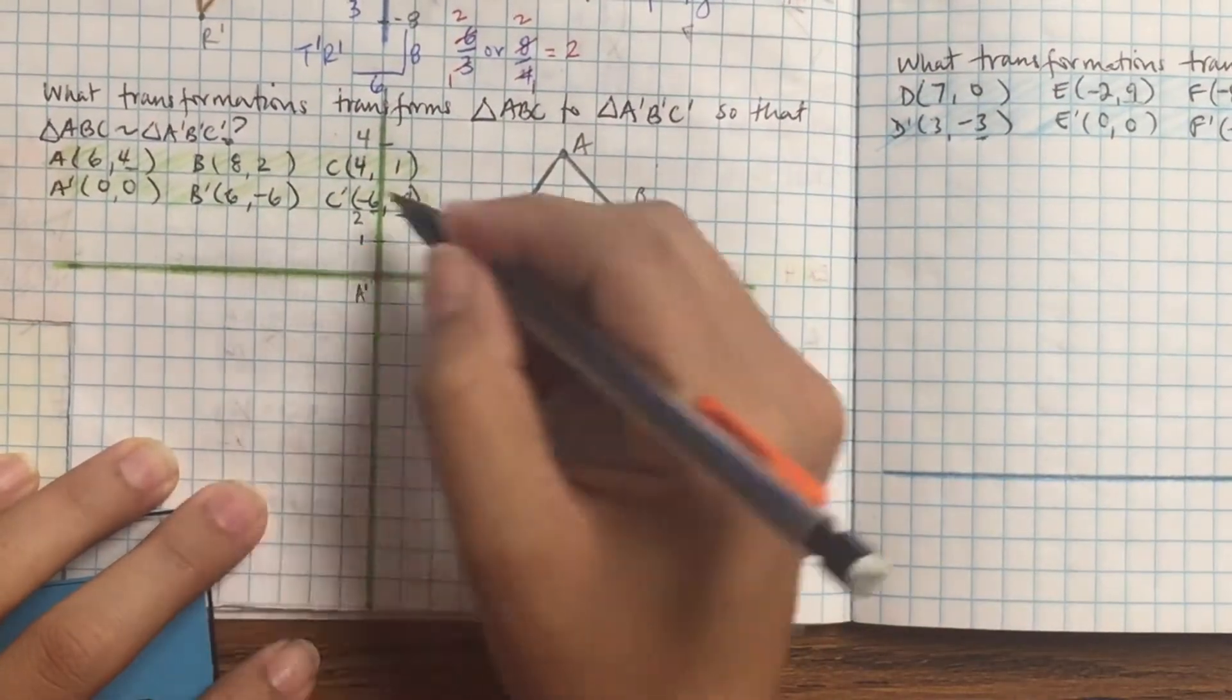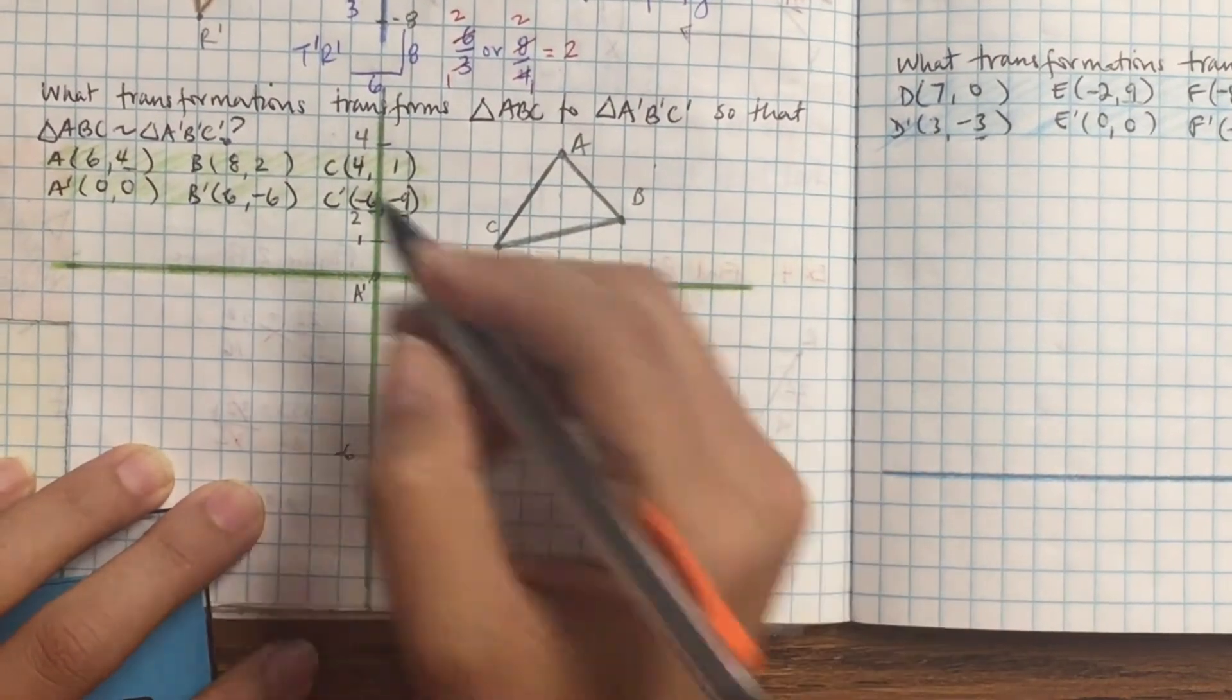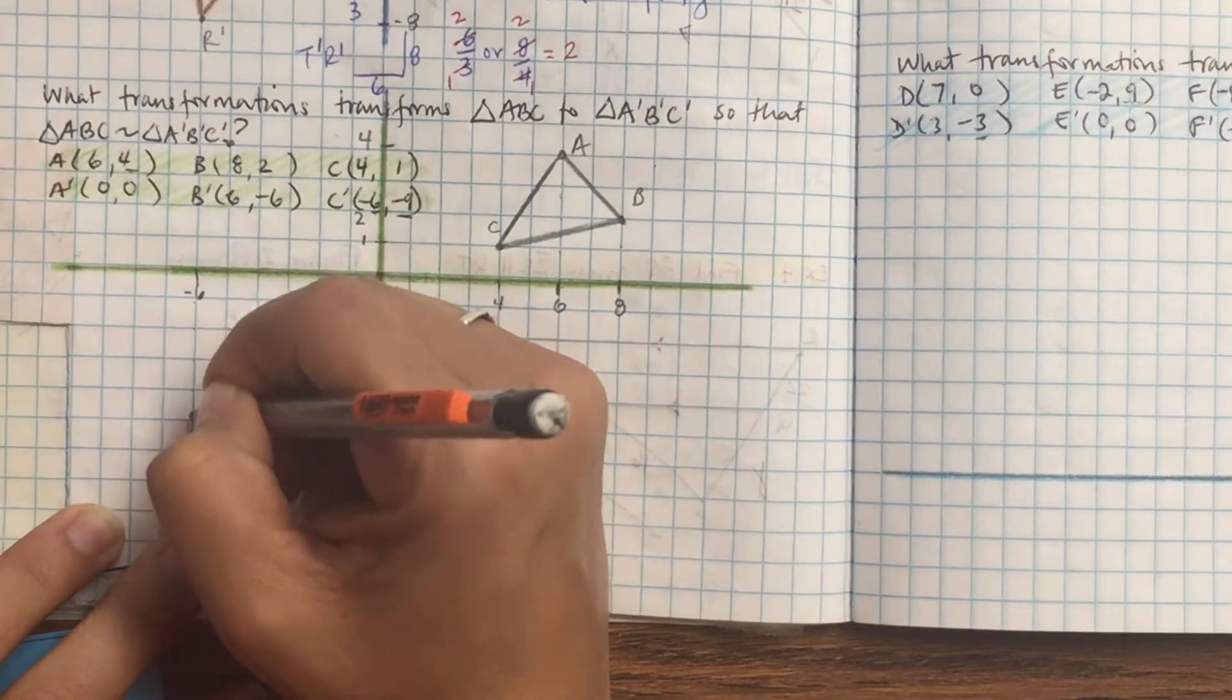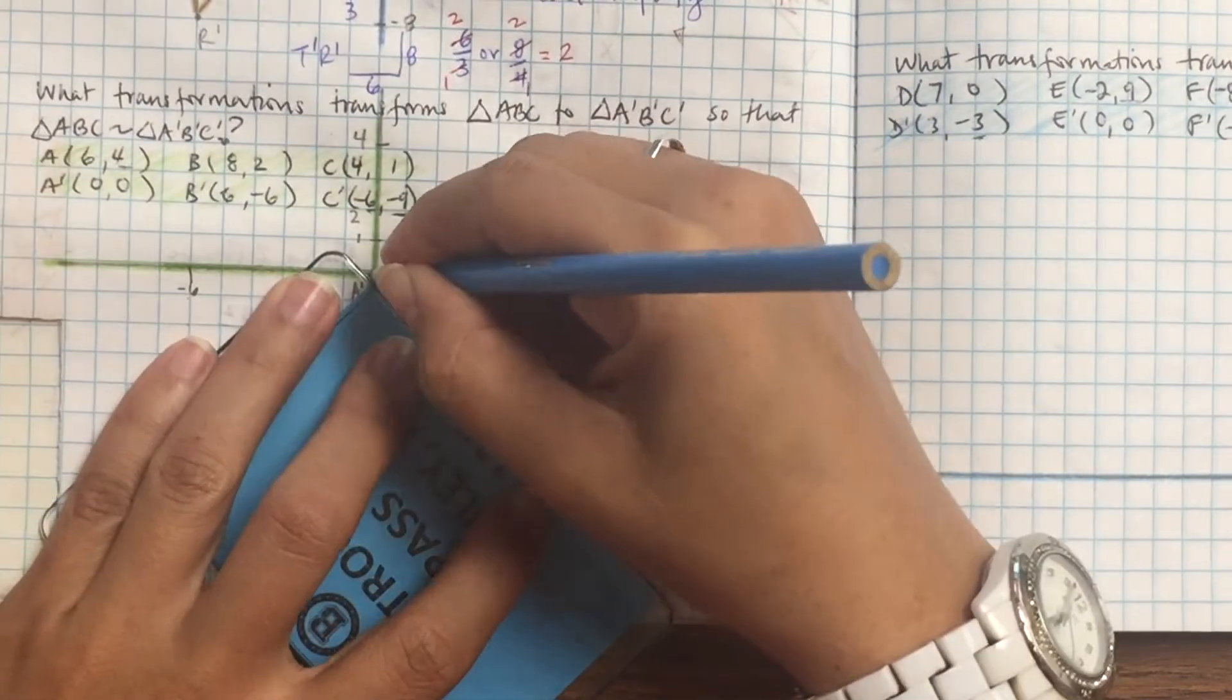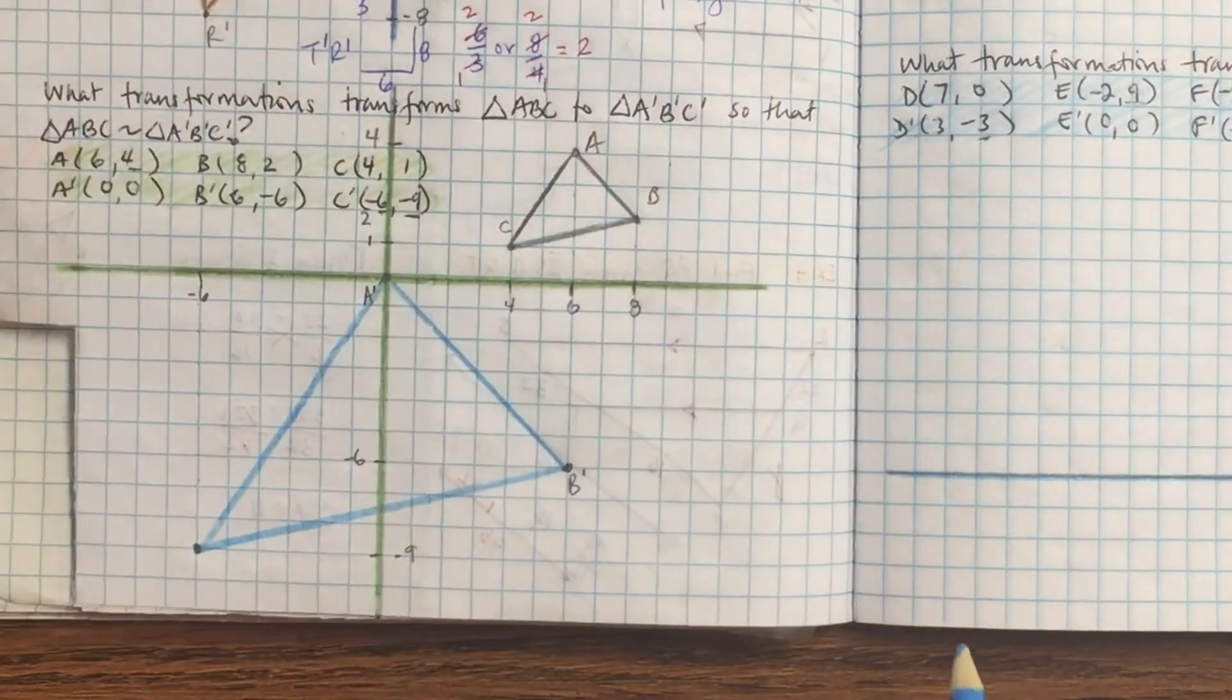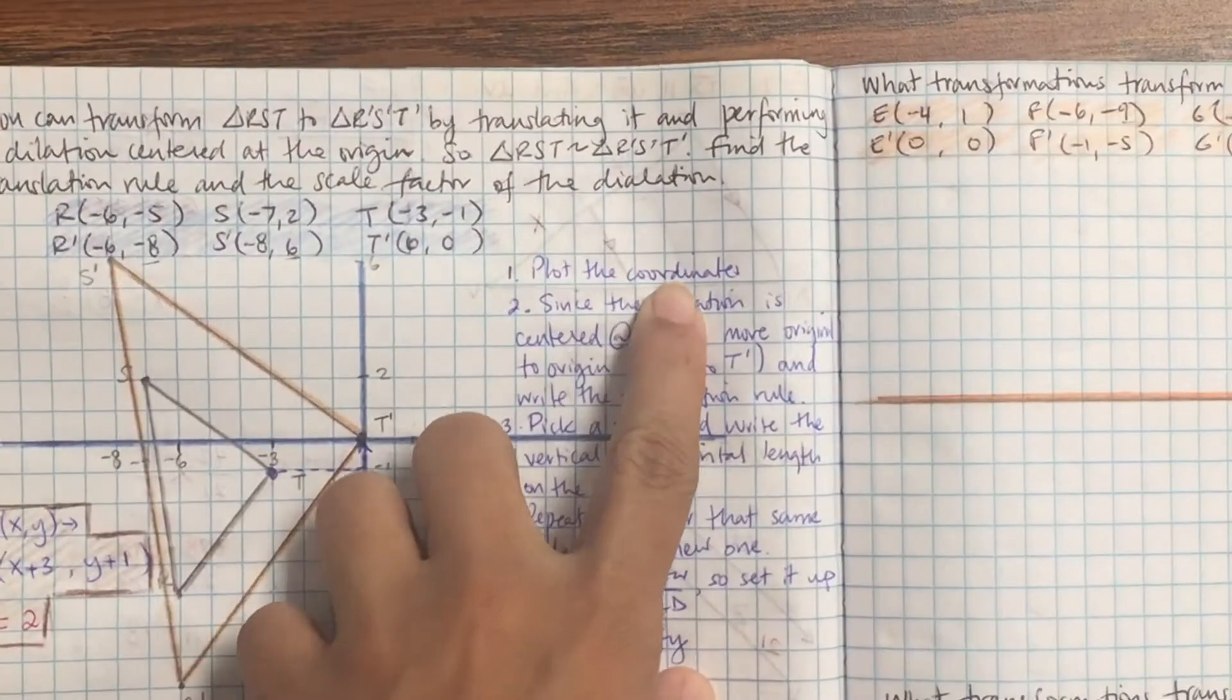Let's plot the transformation. So it's going to be 0, 0, and then 6 negative 6, that's right 6 and down 6. That's B prime. And then C prime is negative 6 negative 9, so that's going to be left 6 and down 9. Go ahead and join the points.